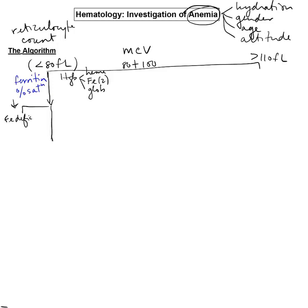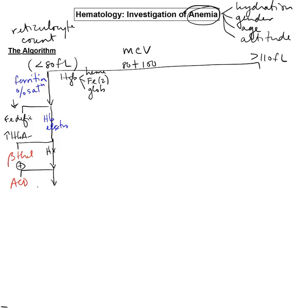If iron studies are normal, you've got to keep going. The next test to do is a hemoglobin electrophoresis. Increased hemoglobin A2 is going to be your beta thalassemias. If this is normal, you need a little history — if you have a history of systemic inflammatory disease like rheumatoid arthritis or lupus, that's going to suggest anemia of chronic disease. If this is also normal, you're left with diagnoses of exclusion: the commonest cause of sideroblastic anemia is lead poisoning, and the other cause is alpha thalassemia, which require clinical correlation.